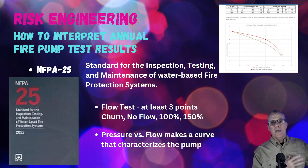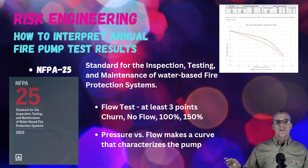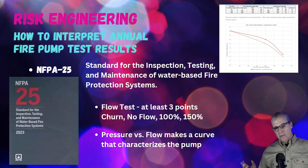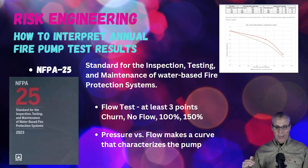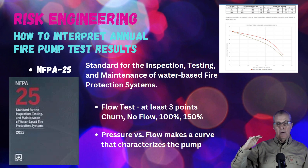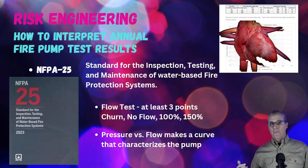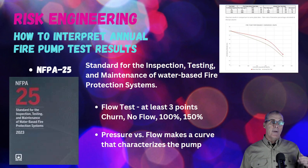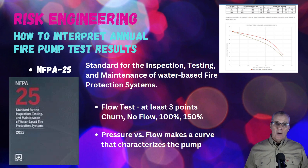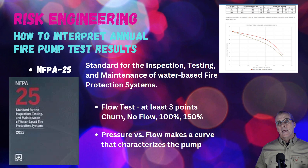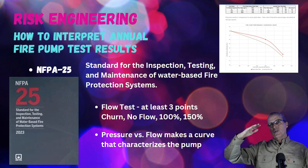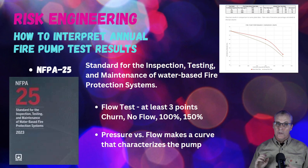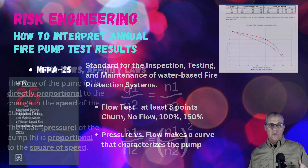In the old days of NFPA 25, it was okay if the pump could put out the water necessary for the largest system demand on site. That has since been changed to compare your results with the original brand-new pump. Whenever your pump is more than 5% below what it was doing when it was brand new, the manufacturers think you need to take it apart, figure out what's going wrong, replace the impeller, and get it back up to 100% of brand-new performance — even if the pump was originally oversized by 50%.